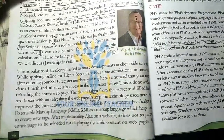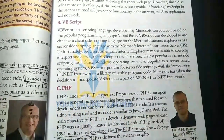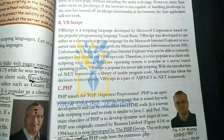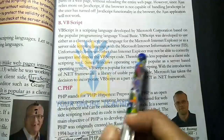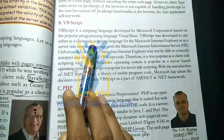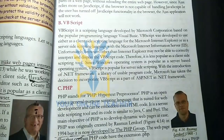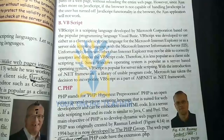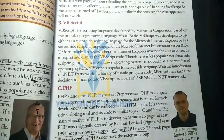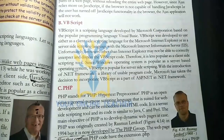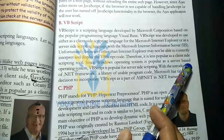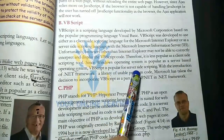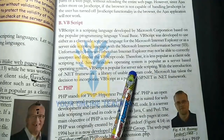Next is VBScript. VBScript is developed by Microsoft. VBScript is based on Visual Basic and was developed as both a client-side and server-side scripting language. Many browsers other than Internet Explorer cannot interpret it. Since Windows operating system is popular as a server-based operating system, VBScript is popular for server-side scripting.